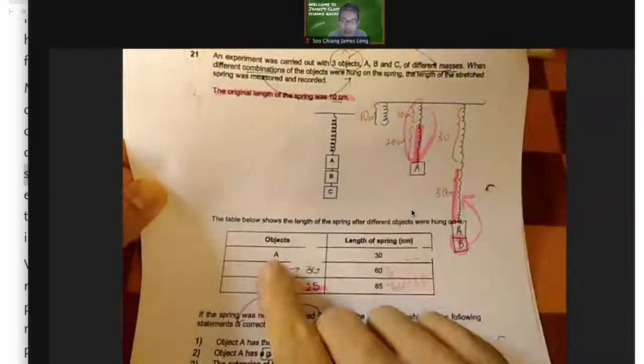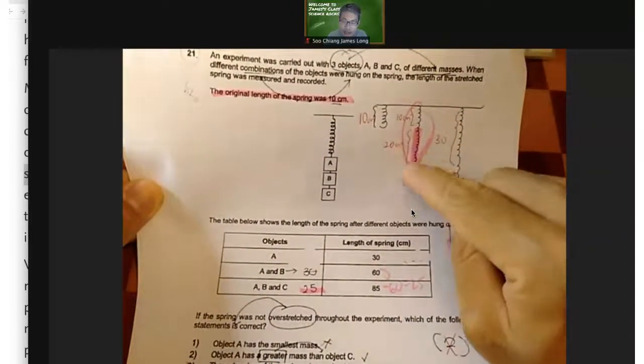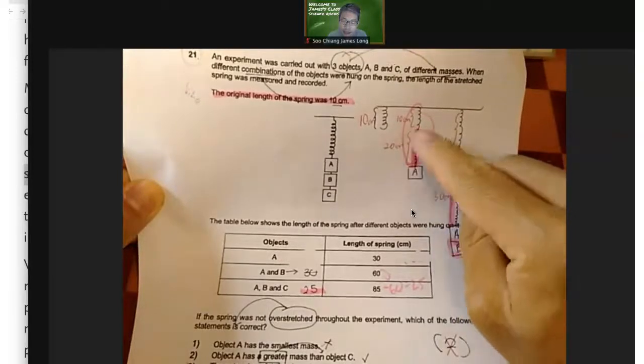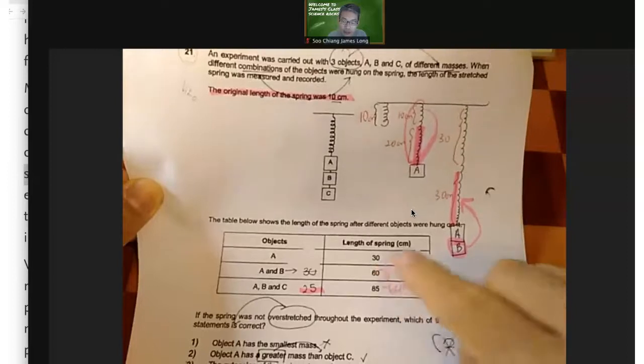You got it wrong because you forgot to take this piece of evidence, this piece of information into consideration. You thought that A causes a 30 cm extension. This is not the extension. This is not the extension. And you thought this is greater than this. That's why your answer was the wrong one.